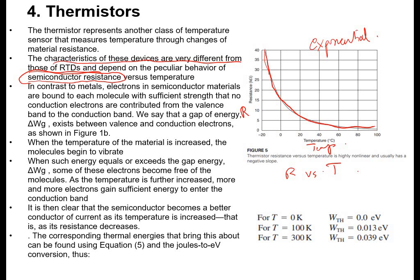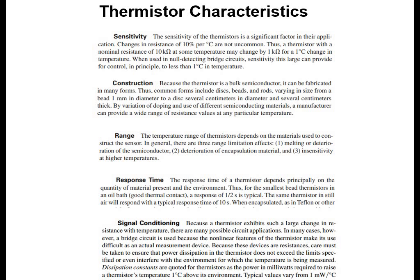The characteristics of these devices are very different from RTDs and depend on the behavior of semiconductor resistance versus temperature. It is very nonlinear because it is a semiconductor, not a conductor. This gives a different characteristic and a different range. And of course, that would produce a different delta V output.